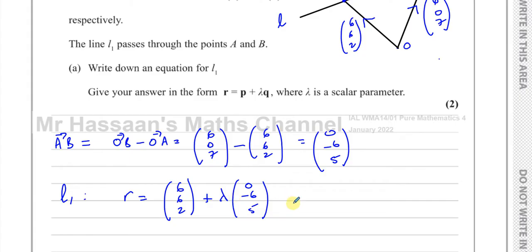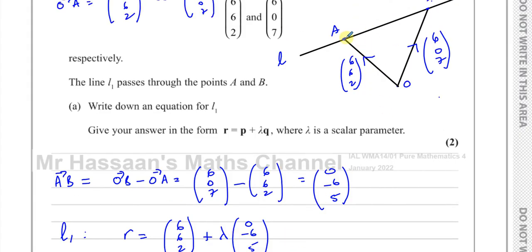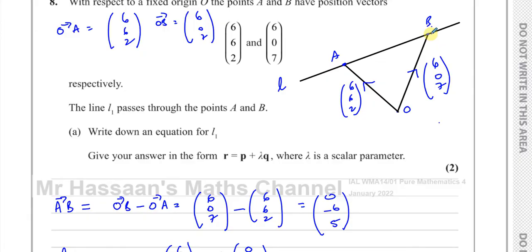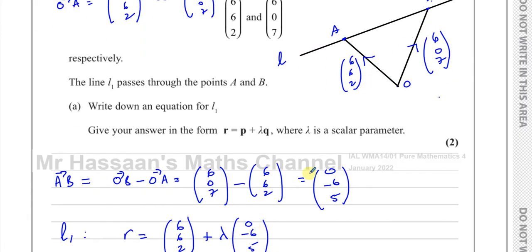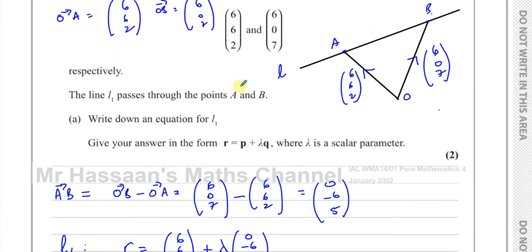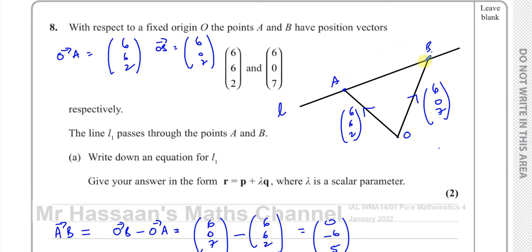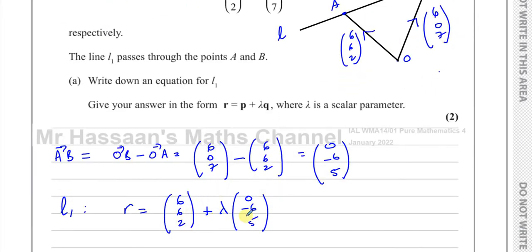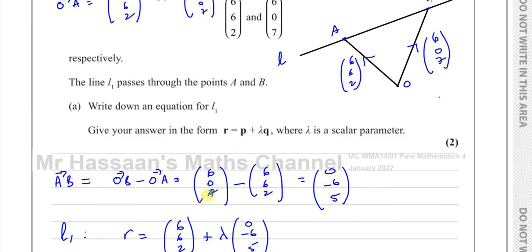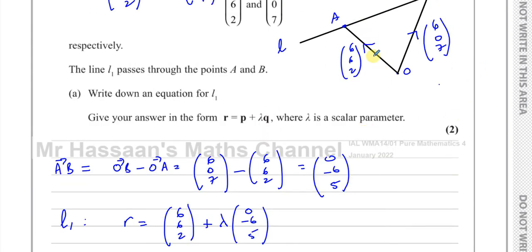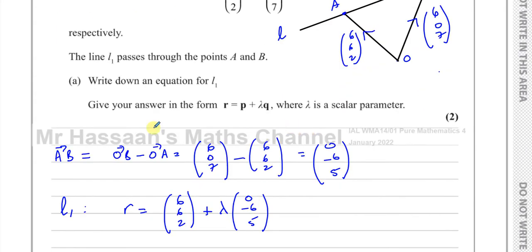The vector (6, 6, 2) takes us from O to point A, and then lambda times (0, -6, 5) moves us along the line. When lambda is 1, it takes us to B. If lambda is minus 1, it goes in the opposite direction. Lambda scales how far along the line we travel. So (6, 6, 2) is the position vector that gets us to the line, and the direction vector moves us along it. That's part A done.